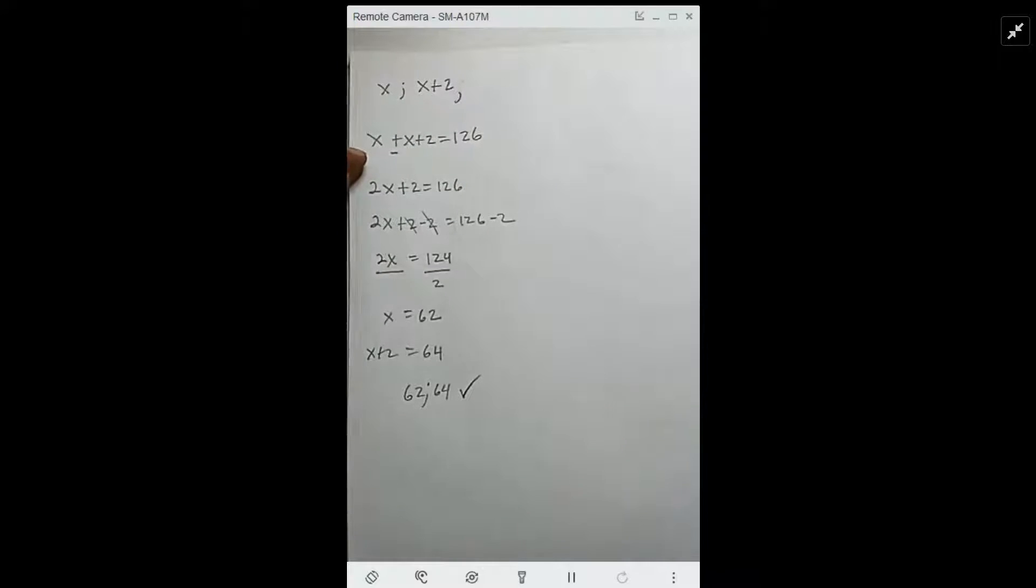But anyway, we set it up as follows: x plus x plus 2. These are the two consecutive integers. And the question said they equal 126. So that's our setup. And since this is a middle school question, I'm going to work through it all the way to the end.